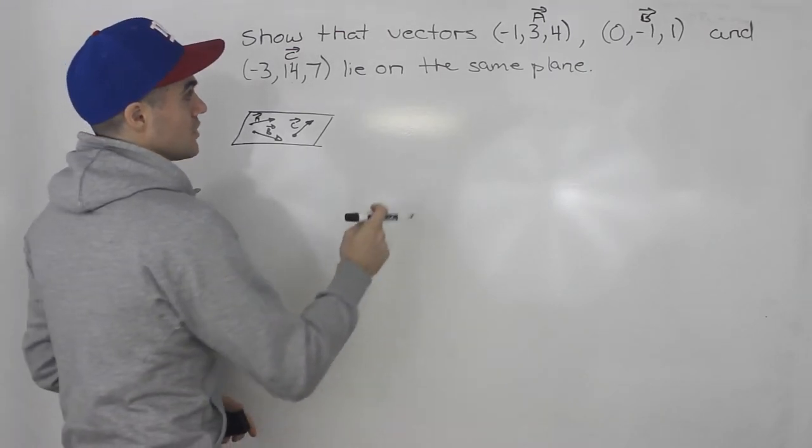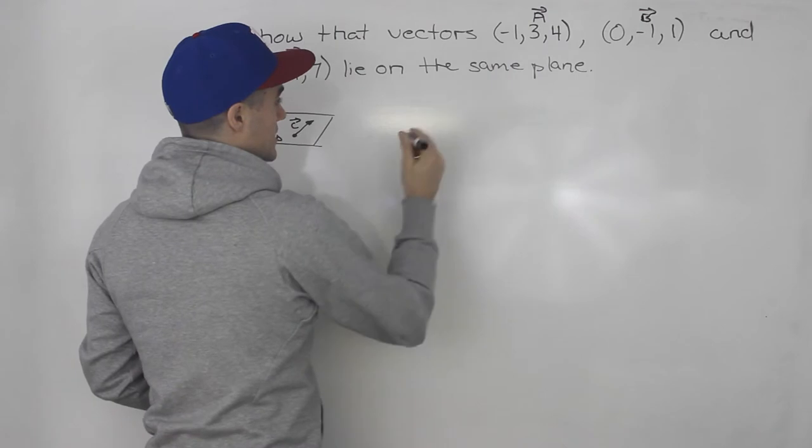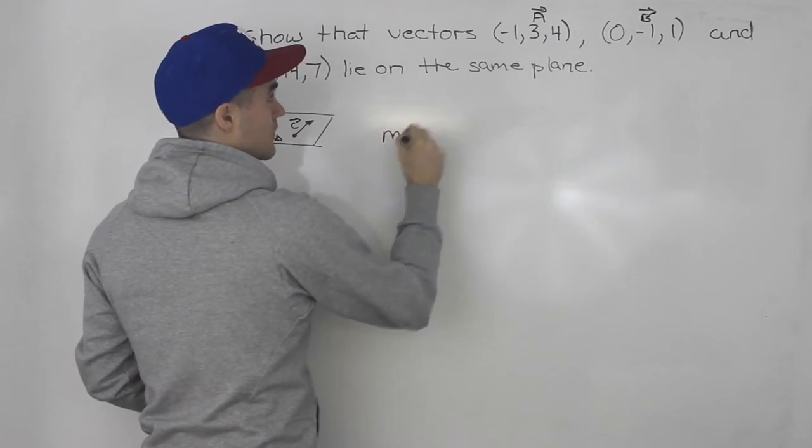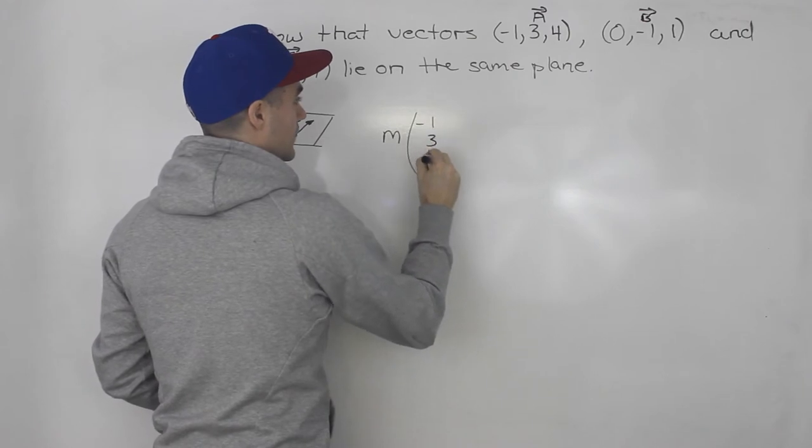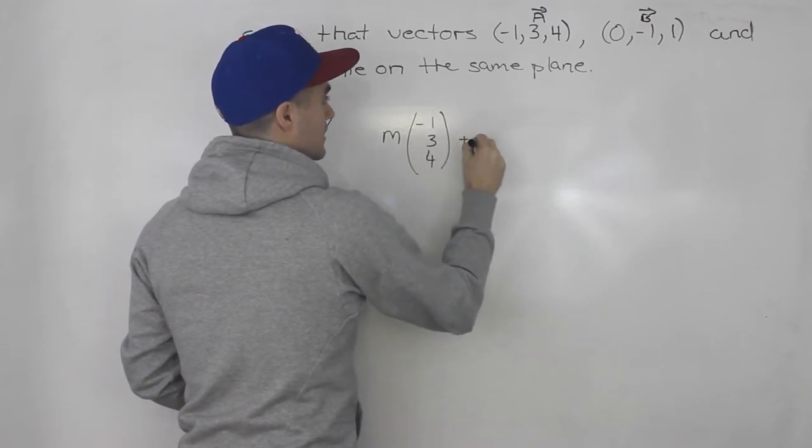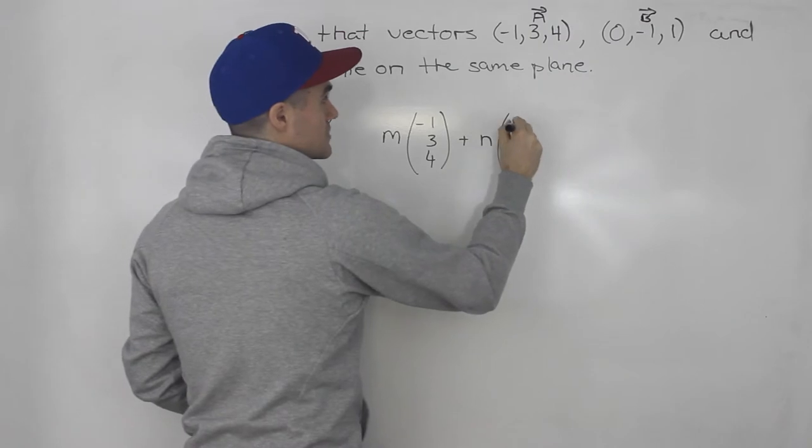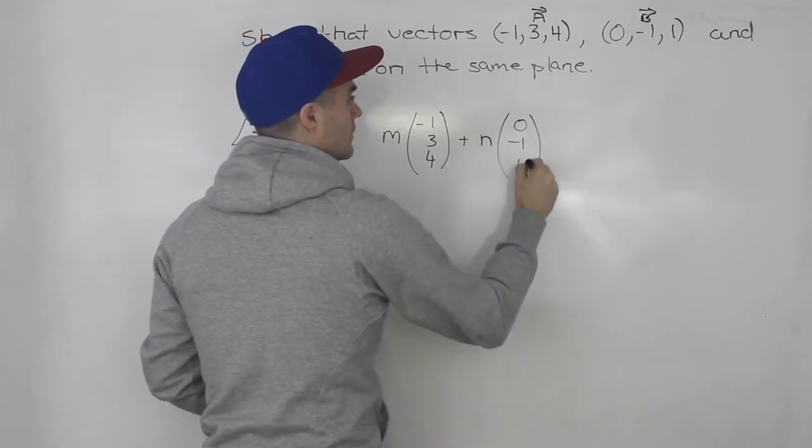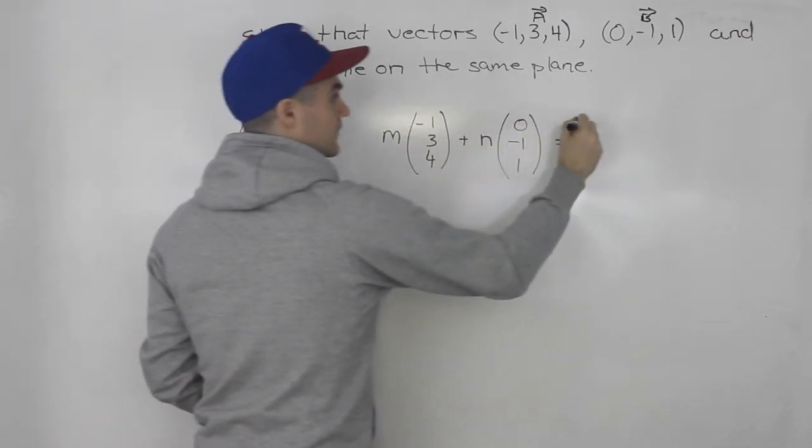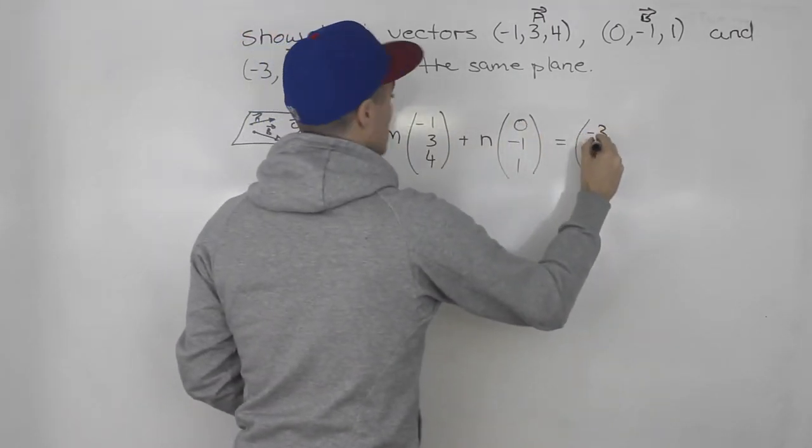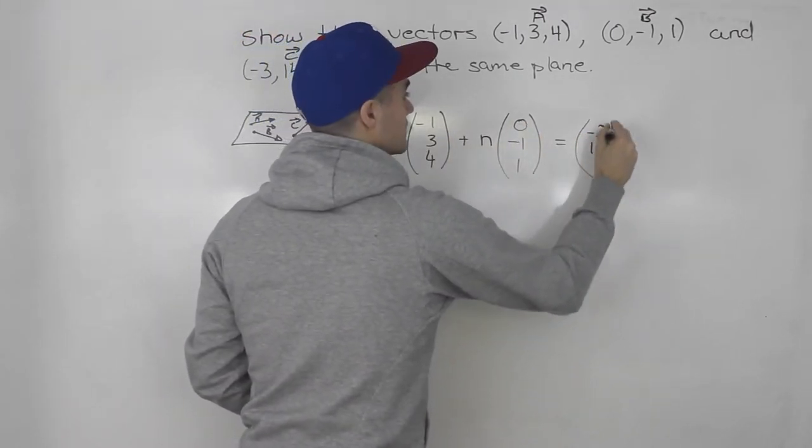So let's show that if we take a constant m, multiply it by vector a plus a constant n, multiplied by vector b, so (0, -1, 1), we can get this vector here, (-3, 14, 7).